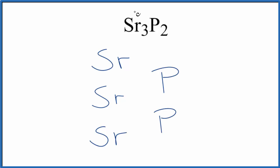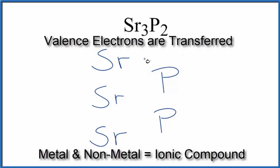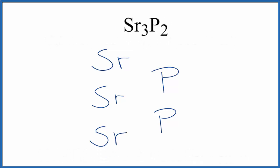So strontium, that's a metal. Phosphorus is a non-metal. So we're going to treat this as an ionic compound. And in an ionic compound, electrons are transferred from the metal to the non-metal.